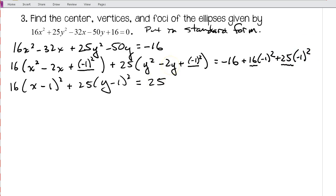Remember our standard form: it's equal to 1 for ellipses. It's always going to be equal to 1. So in order for this to equal 1, I have to divide by 25, which means I have to divide this by 25, which means I have to divide this by 25.